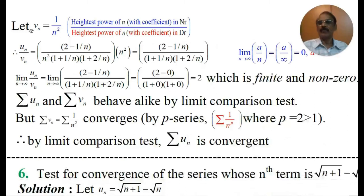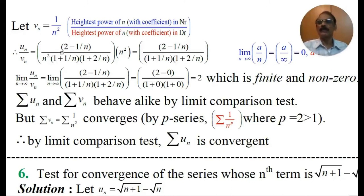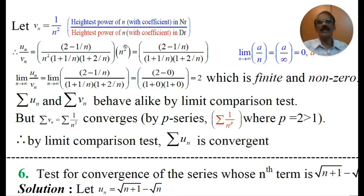Now find the ratio un by vn. That equals (2 − 1/n) divided by n²(1 + 1/n)(1 + 2/n), multiplied by the reciprocal of vn which is n squared. The n squared terms cancel, giving un by vn equals (2 − 1/n) divided by (1 + 1/n)(1 + 2/n).